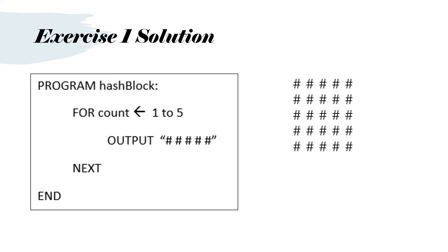The solution looks like this. We have program hash block. We've got FOR, there's our variable count, and we put the arrow. We're going to count from 1 to 5. And OUTPUT 5 hash symbols every time we go around the loop. Then we go NEXT and END for the end of the program.